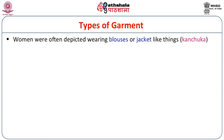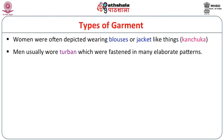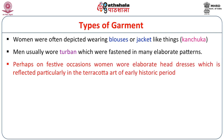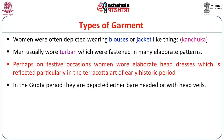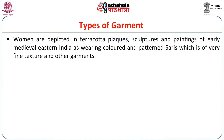For women, we have depictions of them wearing blouses or jacket-like things, which is called kanjuka, and probably this idea of wearing jackets came from the West. Men usually wore turbans, which were fastened in many elaborate patterns. On festive occasions, women wore elaborate headdresses, which is reflected particularly in the terracotta art of the early historic period. In the Gupta period, they are depicted either bareheaded or with head veils. In the terracotta plaques, sculptures and paintings of early medieval eastern India, we find that colored patterns of saris with very fine texture could be seen.